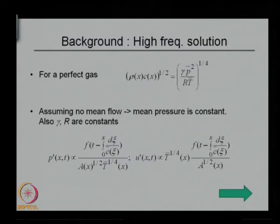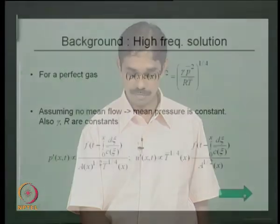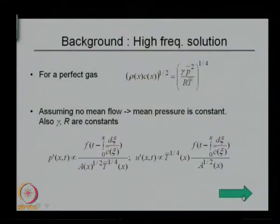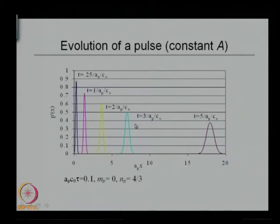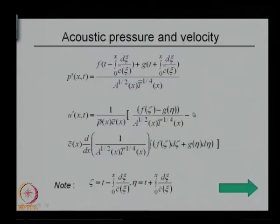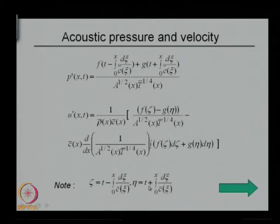We started with some heuristic arguments and assumptions, but later derived for some special temperature profiles that the pressure can indeed be expressed in this form. The velocity was also in a similar form, but there were extra terms. The characteristic t minus x over c is now replaced by t minus integral d-psi over c, and the other one was t plus integral d-psi over c.